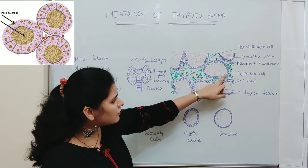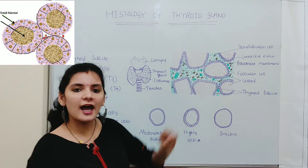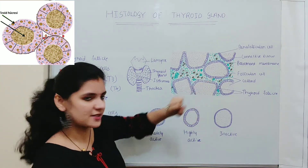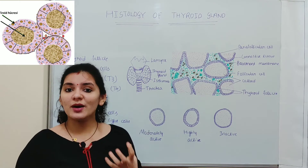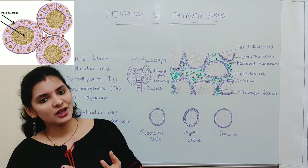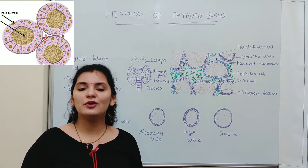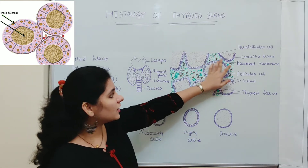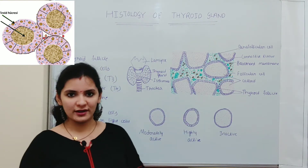If you consider each follicular cell, each follicular cell has a very large nucleus at the center. Apart from that, these cells consist of an abundant amount of rough endoplasmic reticulum, Golgi complex, microfilaments, microtubules, and microvilli. That is about the follicular cells which make up the thyroid follicle.